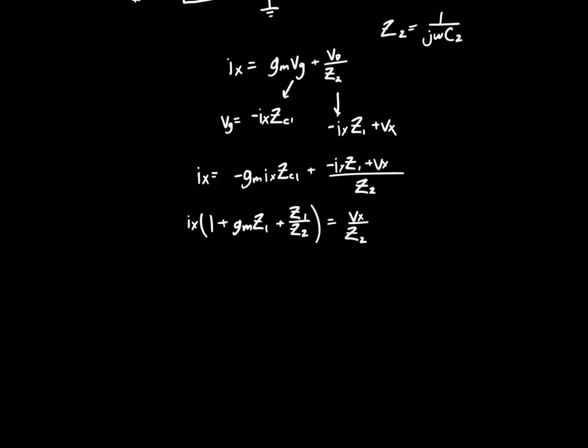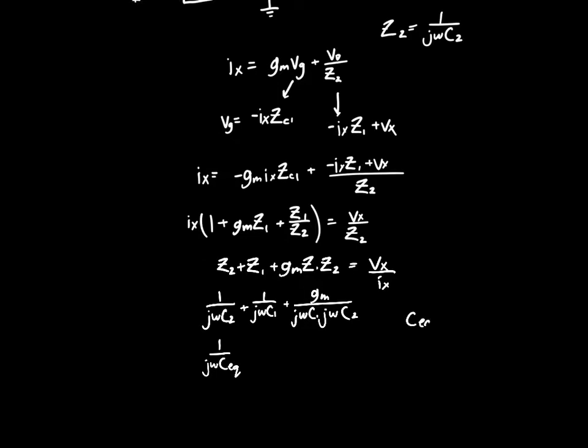If we multiply both sides by Z2 and divide by IX, we get Z2 plus Z1 plus GM Z1 Z2 equals VX over IX. That's just 1 over jωC2, the impedance of capacitor 2, plus 1 over jωC1, plus GM over jωC1 times jωC2. We've got two j's, so we've got 1 over jω over here. It's C-equivalent, where C-equivalent is just the two capacitors in series, C1 C2 over C1 plus C2. So this is our imaginary part. Plus, since the two j's cancel out to give negative 1, we have minus GM over ω² C1 C2.